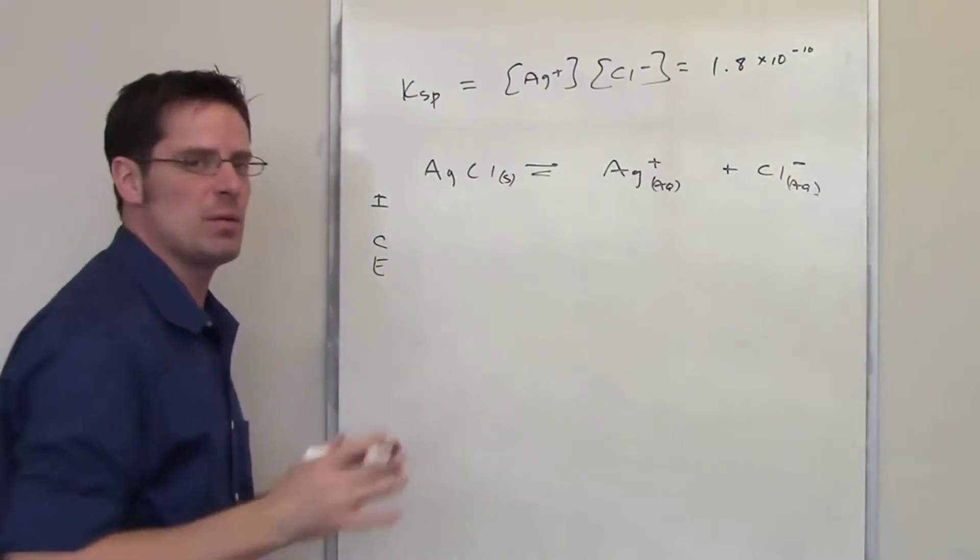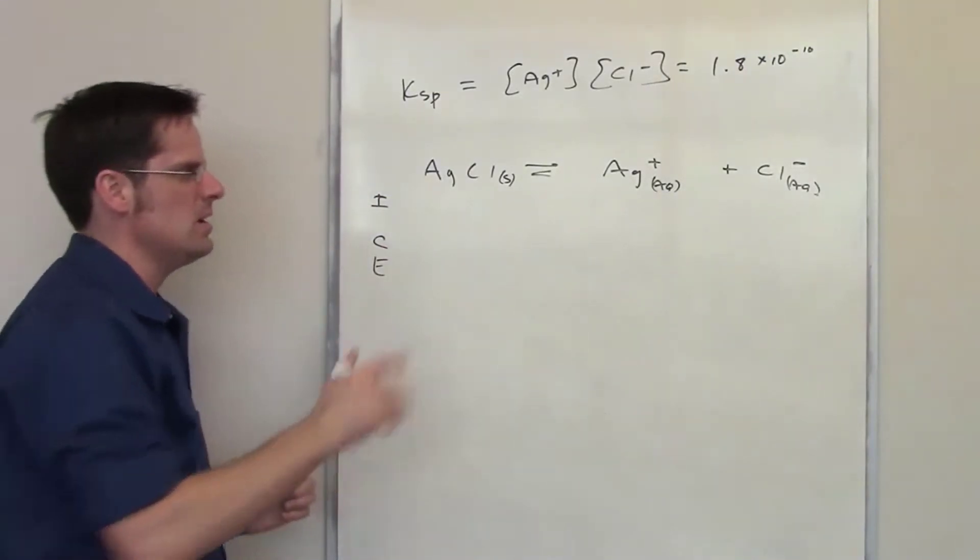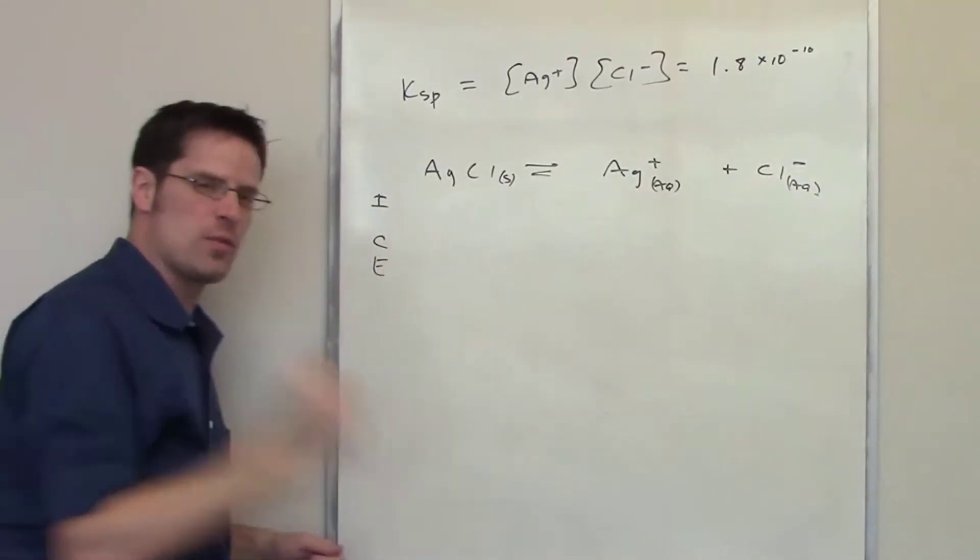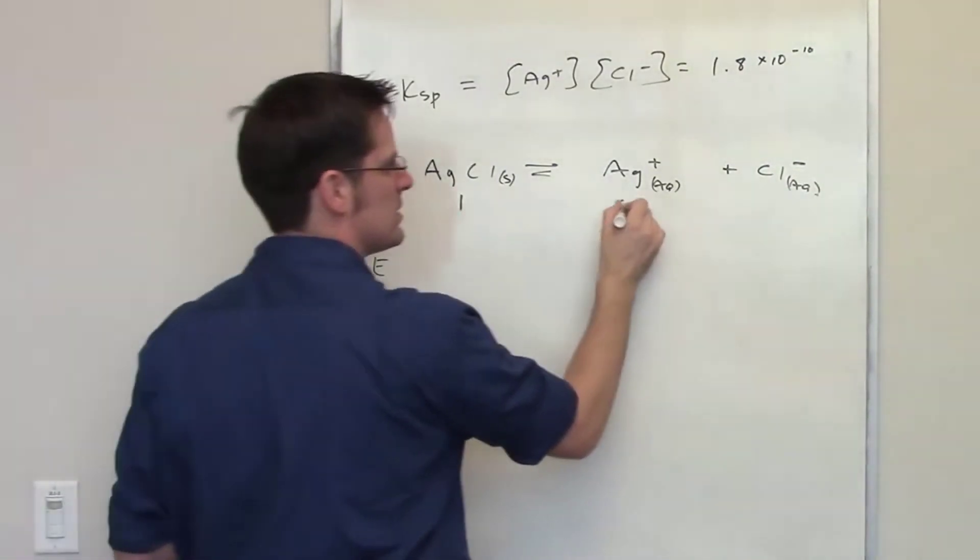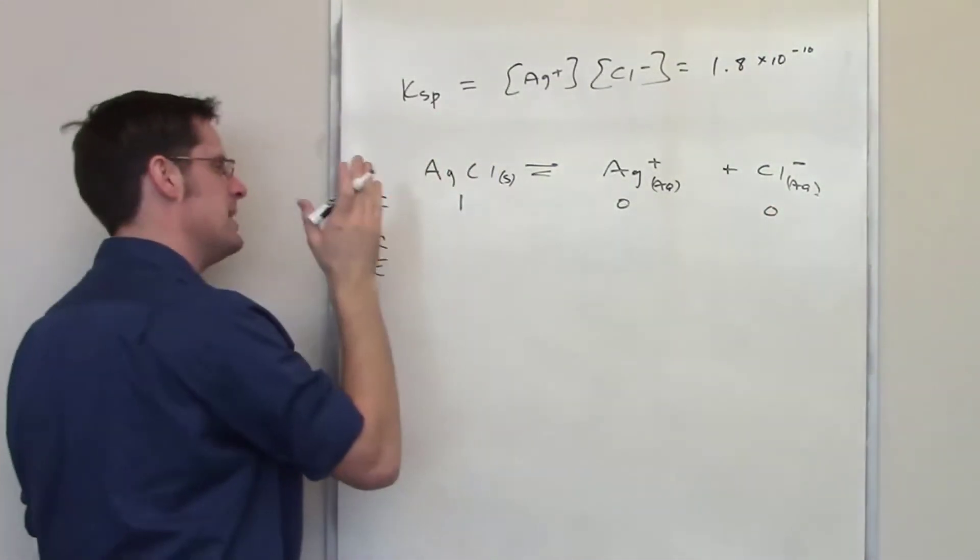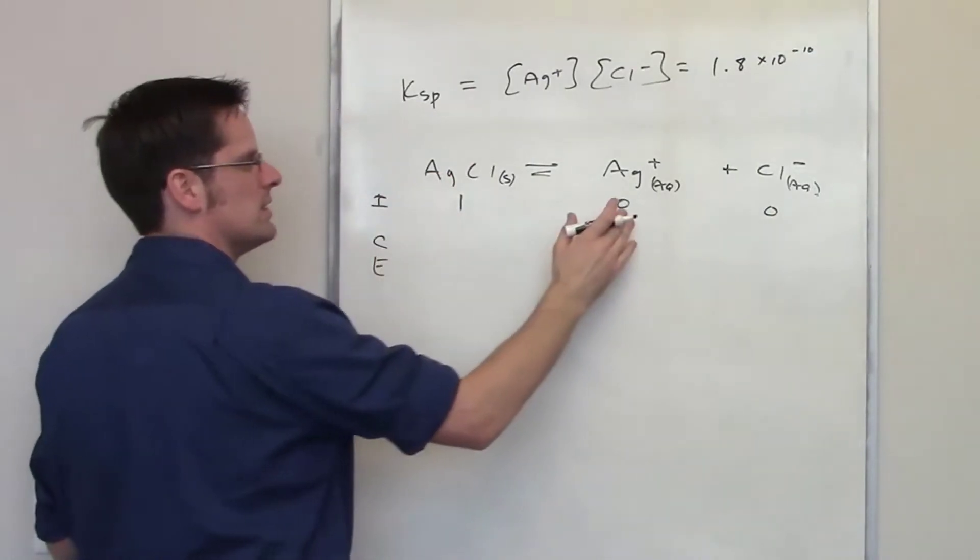I'll write down ICE here and we'll begin by assuming that we have a concentration right at the beginning. When I take my silver coin and throw it into water, its concentration is going to be 100% and 0% over here, so I'm going to assume an initial concentration of 1, 0, 0.